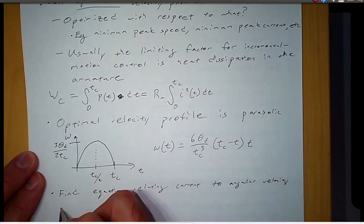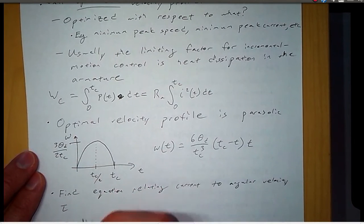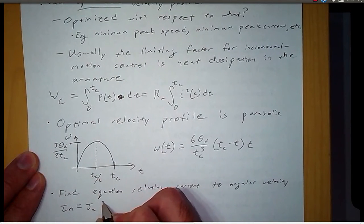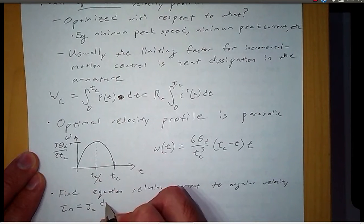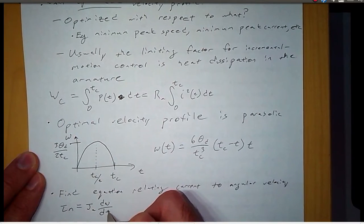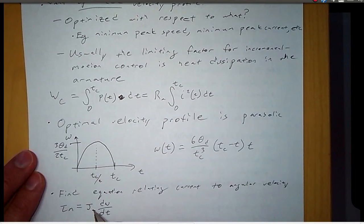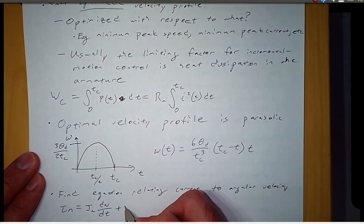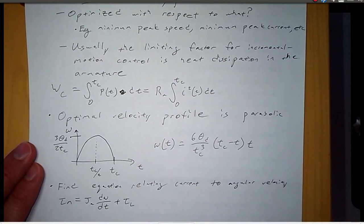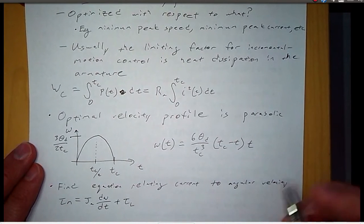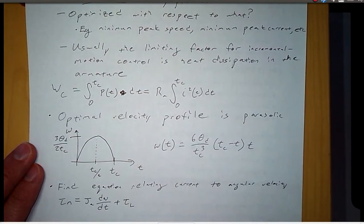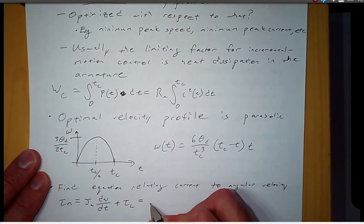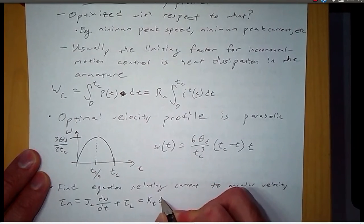And we'll start with this equation that we saw in a previous video for the motor torque and in terms of the motor speed. So the armature moment of inertia, the acceleration, and then we have a load torque here. So load torque could be friction or something. Or if the motor is being used to raise a mass, it would be the torque required to lift that mass. And this is equal to the torque constant times the current.